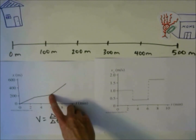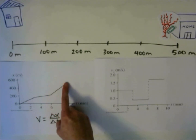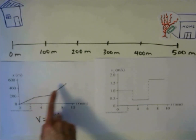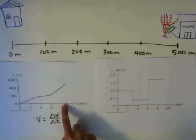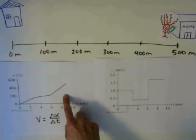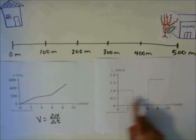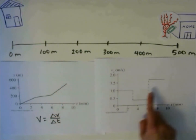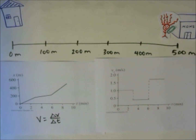For the last section, she speeds up even faster than she was in the first section — you can see because the slope is steeper here than in the first section. If you find the slope of that line, the change in x over the change in time is equal to about 1.7 meters per second. It's a constant velocity, so it appears as a flat line at 1.7 m/s. This is how you go from a position-time graph to its matching velocity-time graph.